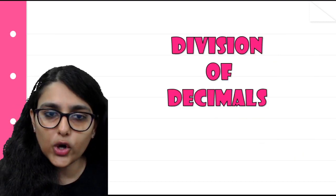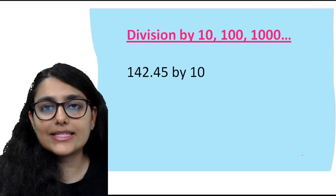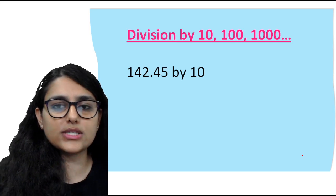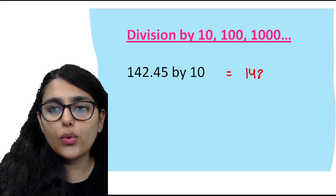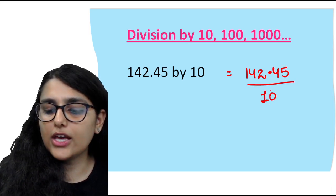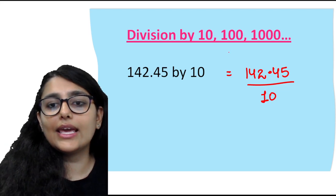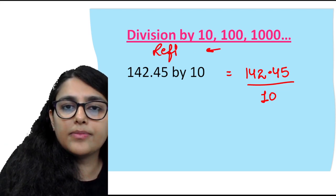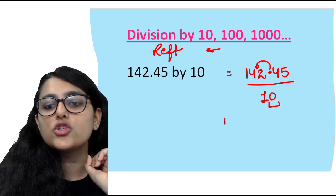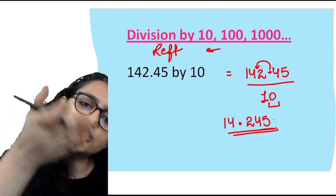Next and the last topic of our decimal numbers is division of decimals. This is also a very important topic. First we do division by 10, 100, 1000 — basically with zeros. This is the opposite of multiplication. In multiplication we moved towards the right-hand side; in division we go towards the left. For 142.45 ÷ 10: one zero, so shift the decimal one place to the left. Answer is 14.245.